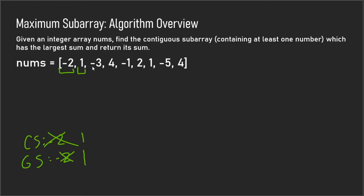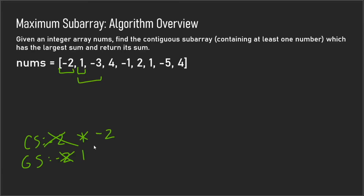Now we get to negative 3 and we check to see if current sum plus negative 3 is greater than just negative 3. In this case it is, so our current sum would now be negative 2 and the subarray we're inspecting becomes 1 and negative 3. We then check to see if our global sum updates, and in this case it does not because negative 2 is less than 1.